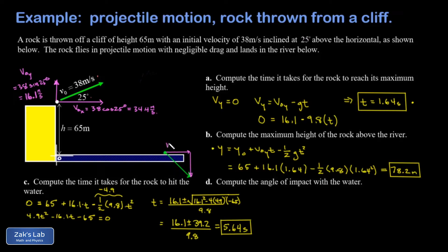The x component is the easy part because the x velocity never changes in projectile motion provided we don't have any drag forces acting. So that is still 34.4 meters per second. Where we have to do some calculation is to find the final y velocity.